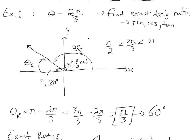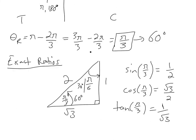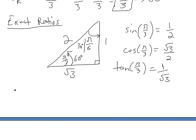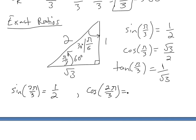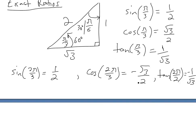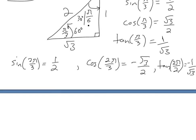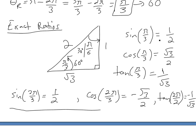Now remember 'All Students Take Calculus' — this tells us sign rules per quadrant. Since 2 pi over 3 is in the second quadrant, only sine is positive; everything else is negative. So: sine of 2 pi over 3 equals 1 over 2 (positive). Cosine of 2 pi over 3 equals negative root 3 over 2. And tan of 2 pi over 3 equals negative 1 over root 3. These are the final answers — the reference angle gives the magnitude, but you need to include the negatives.